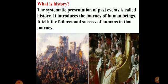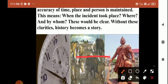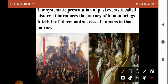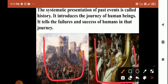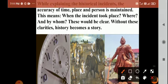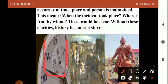History tells the failures and successes in the journey of human beings. When you explain a historical incident, the accuracy of time, accuracy of place, and accuracy of person must be maintained.